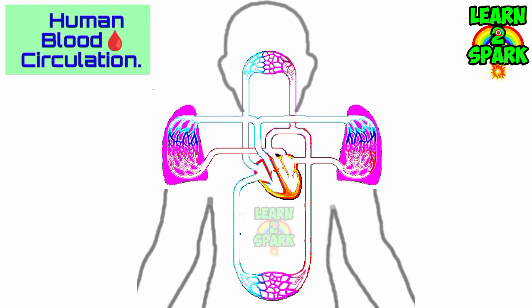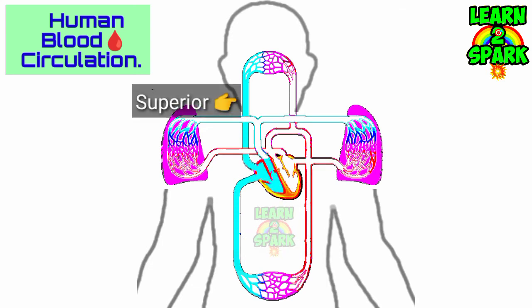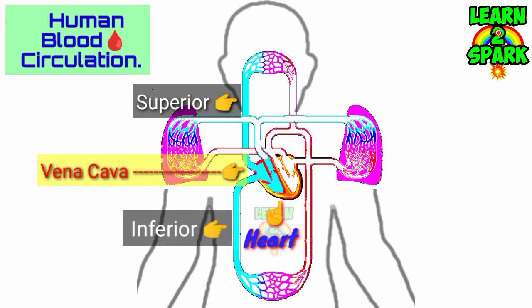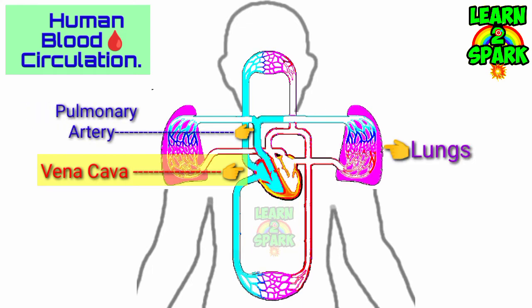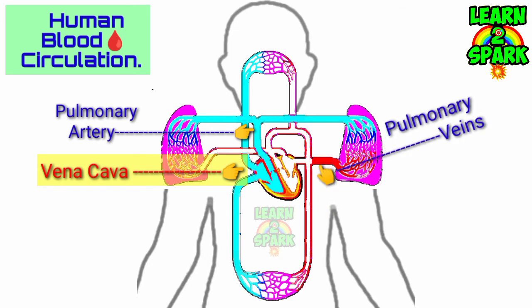Blood gets deoxygenated and is carried to the right auricle of the heart by the superior and inferior vena cava. From the right auricle, blood flows into the right ventricle and then to the lungs through the pulmonary arteries. In the lungs, gaseous exchange takes place and the blood gets oxygenated.